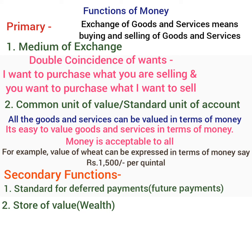The second secondary function is Store of Value. Money is durable, portable, liquid, and divisible, so storing value in terms of money is very convenient. Store of value implies store of wealth. The barter system doesn't allow any convenient system of storage of value, as storing wealth in terms of food grains and cattle is quite expensive, and food grains are perishable in nature. Storing wealth in terms of money is very easy as money can be stored in the form of paper titles and even in banks.